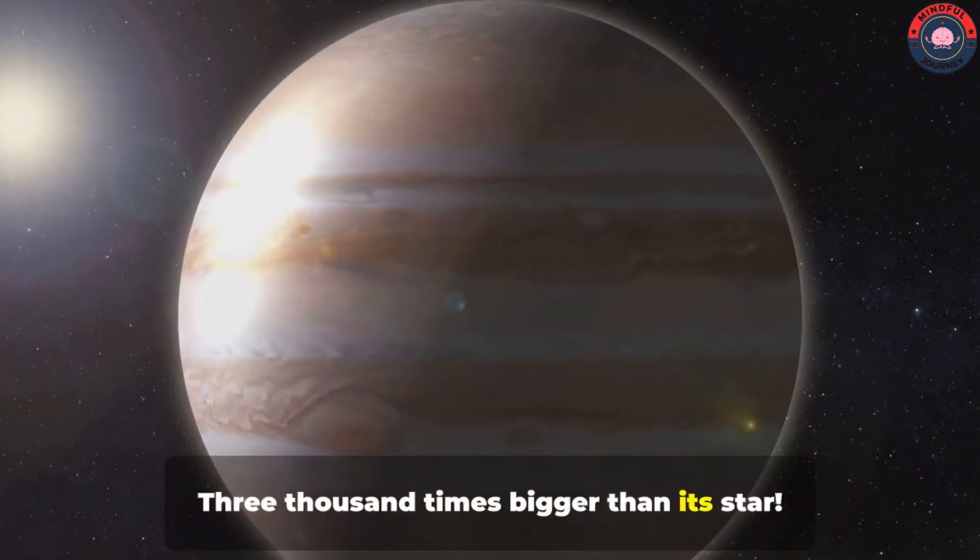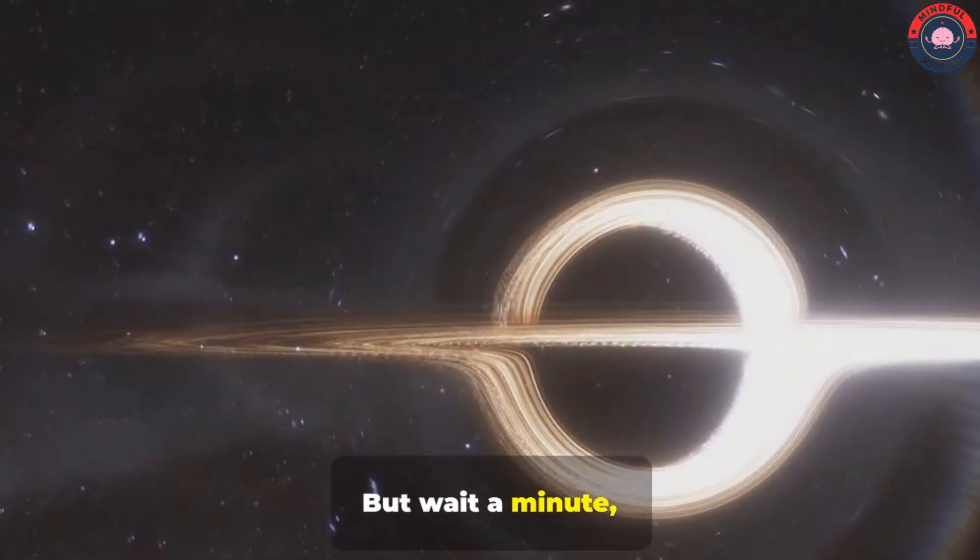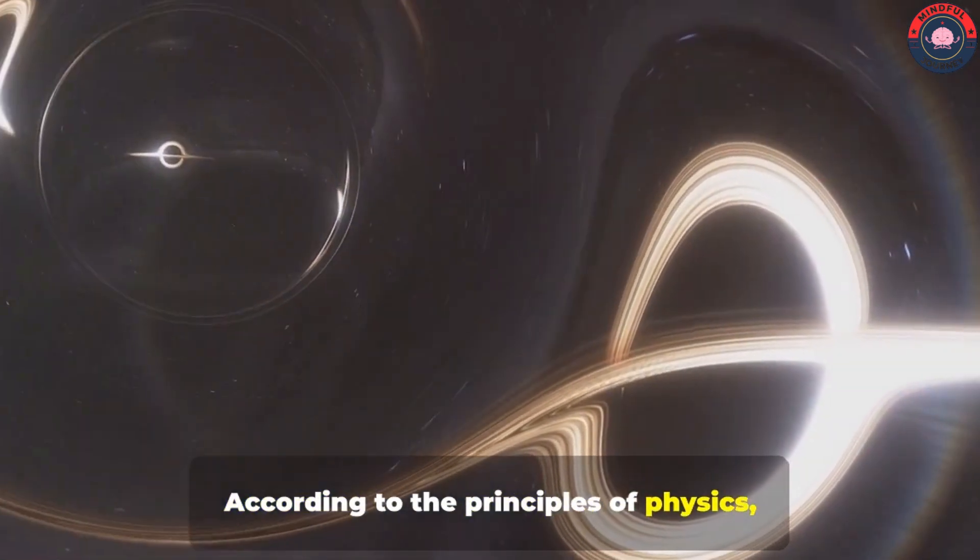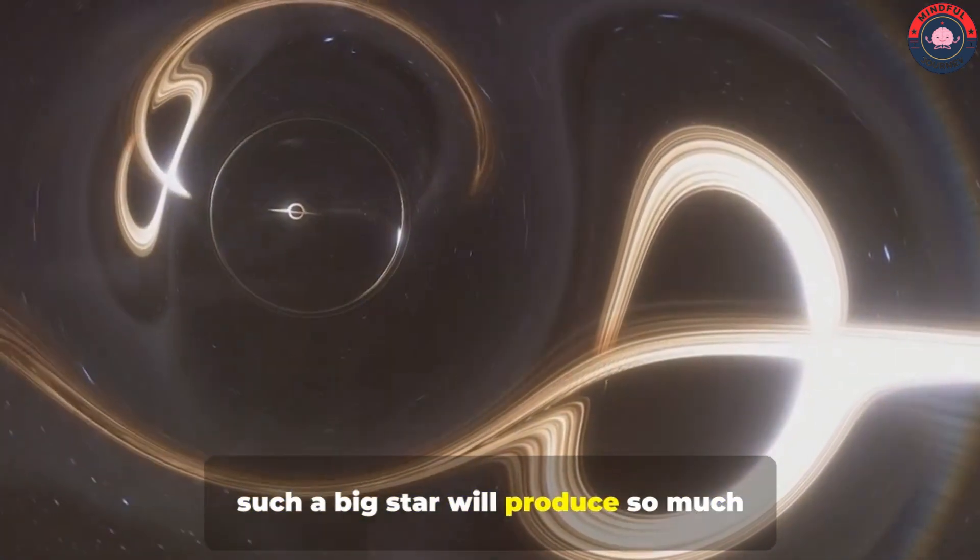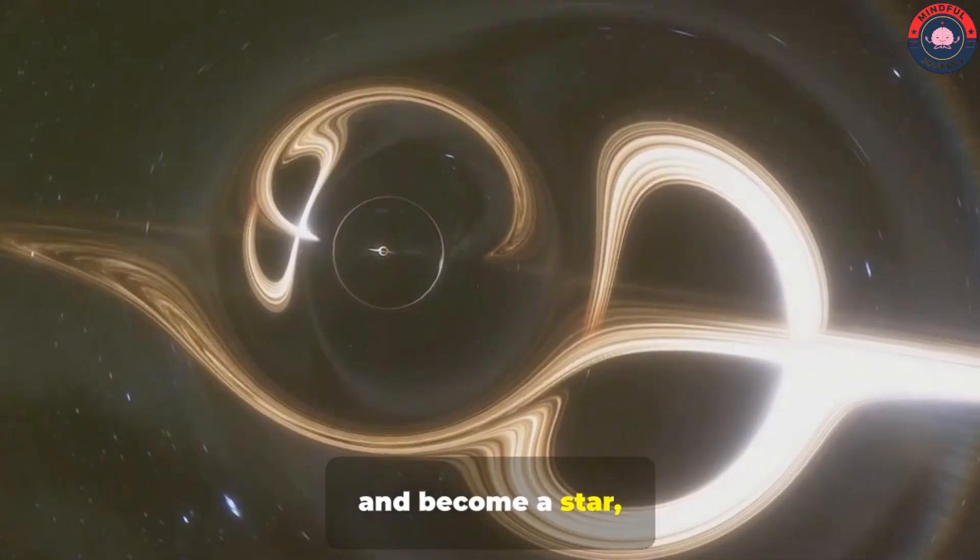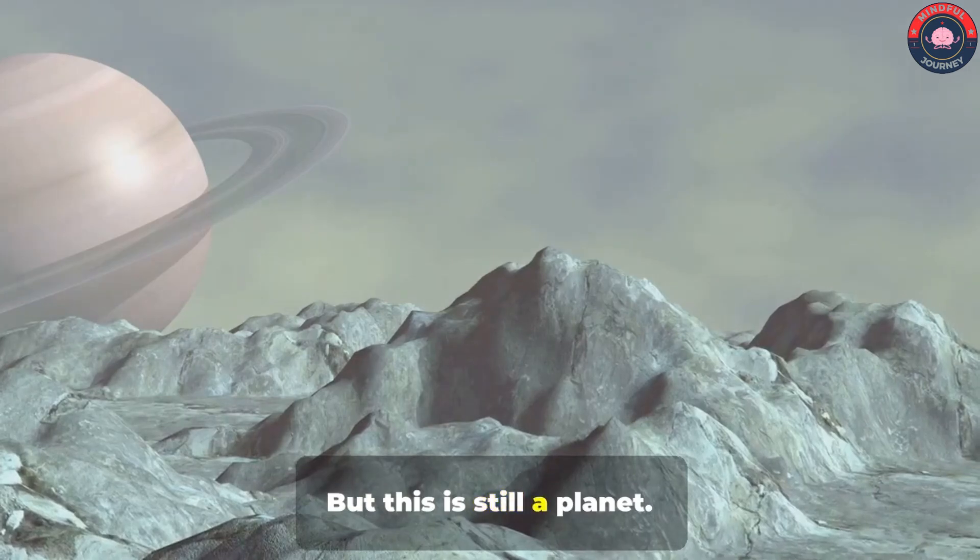3,000 times bigger than its star. But wait a minute. How can a planet be this big? According to the principles of physics, such a big star will produce so much gravity that it will collapse in itself and become a star, right? But this is still a planet.